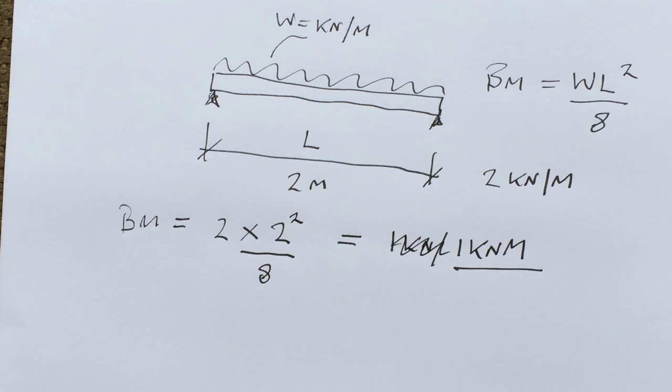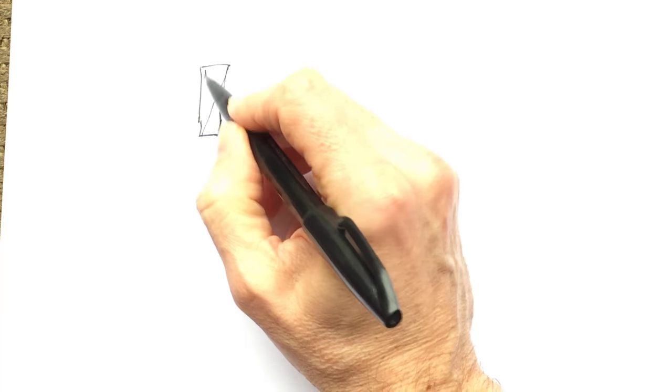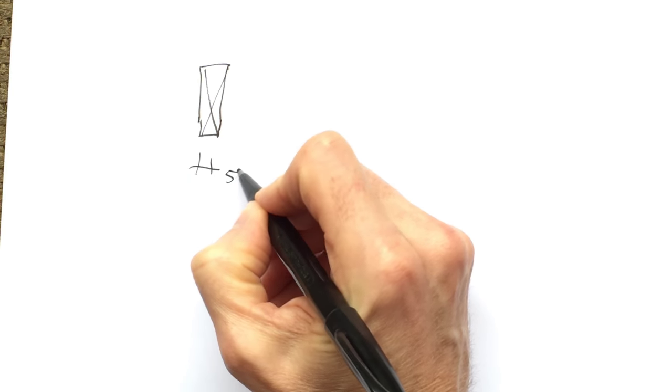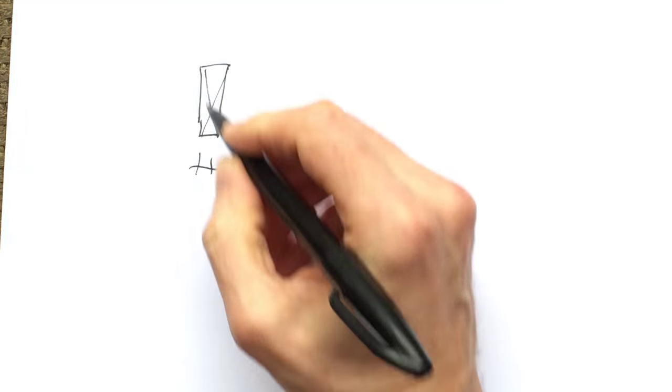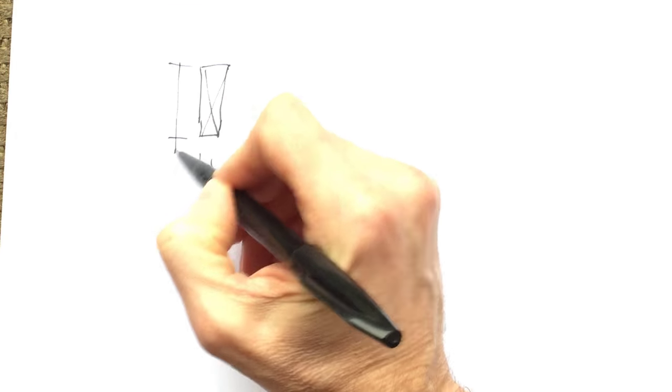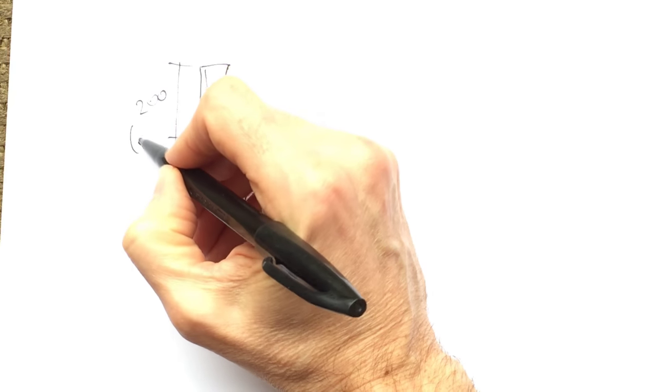So we'll start with a trial size. We might have a stock size of 50 millimeters, that's two inches, by 200 millimeters, which is eight inches.